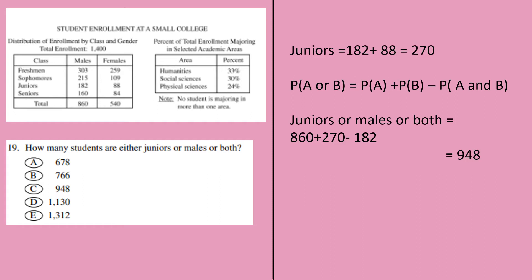Probability of complete juniors is 270, and I have to subtract the common, 182, who are males and junior. So if I subtract that, I get the answer as 948 and my answer is C.